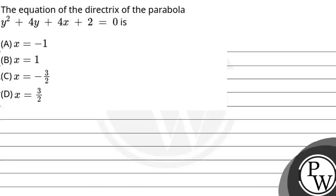Let's read this question. The equation of directrix of the parabola y squared plus 4y plus 4x plus 2 equals 0. Option A: x equals minus 1. Option B: x equals 1. Option C: x equals minus 3 by 2. Option D: x equals 3 by 2.